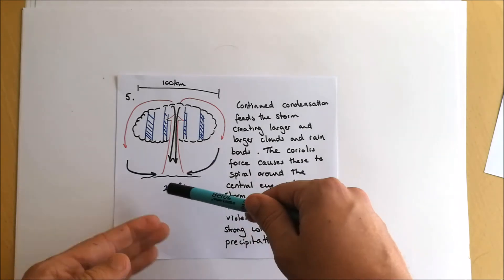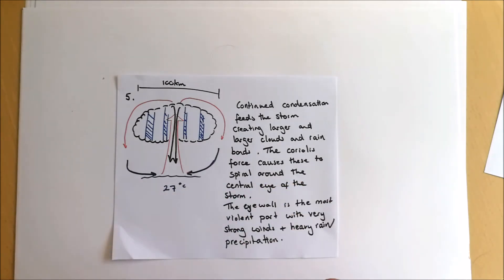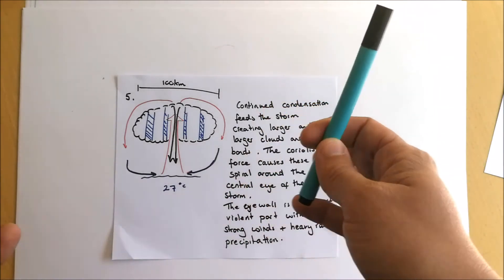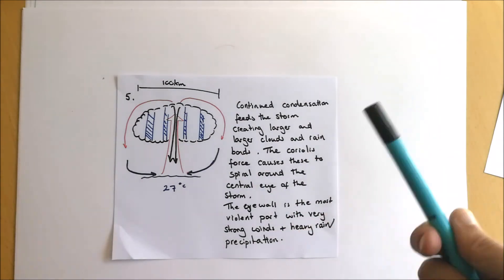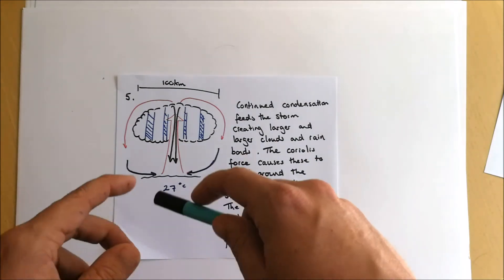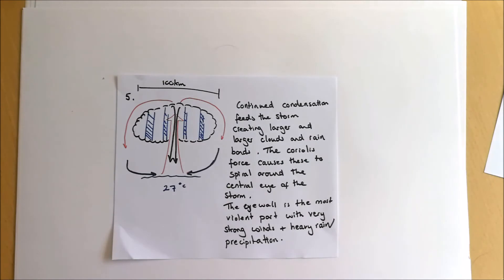So what we now have, back to our original point, is that 27 degrees Celsius water and that rising air. That air is now starting to spin due to the Coriolis force and we've got cloud formation going on due to the condensation.